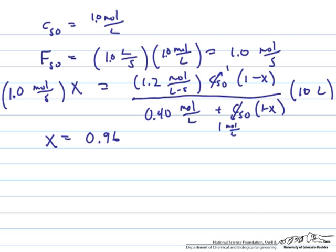Now we have what we need to solve the material balance. Cs0 is 1.0 moles per liter, we're given in the problem statement. We're given the total volumetric flow rate. If we multiply that by Cs0 we get the total molar flow rate to get Fs0 from our expression. Now we can take that expression and substitute in all the values that we need.